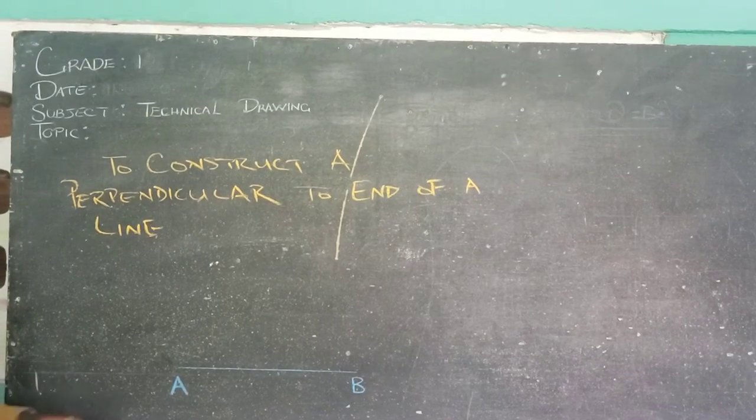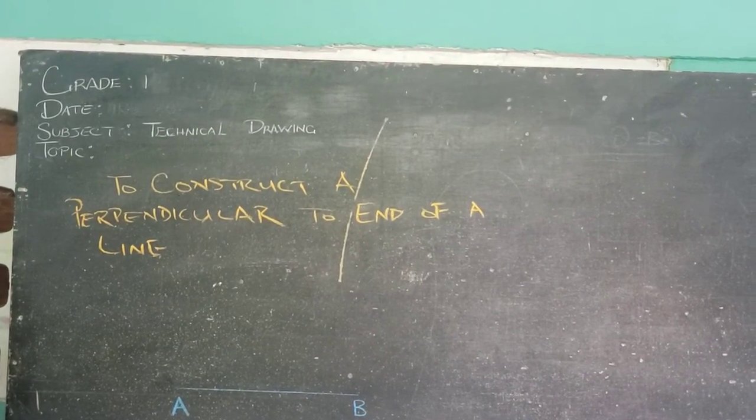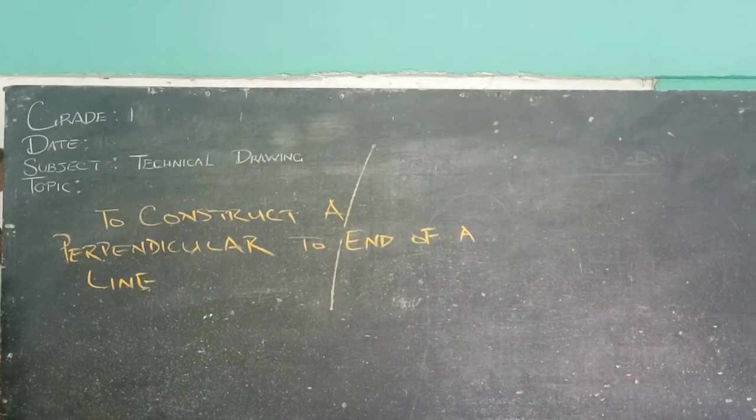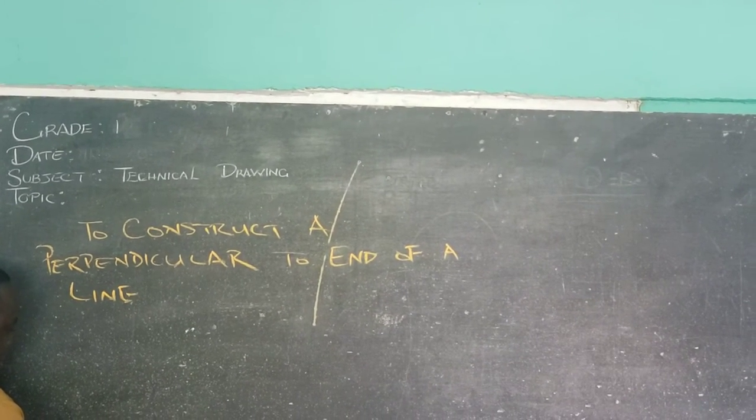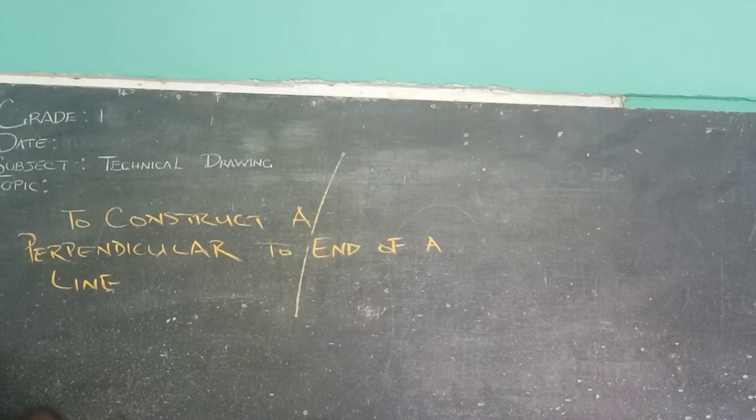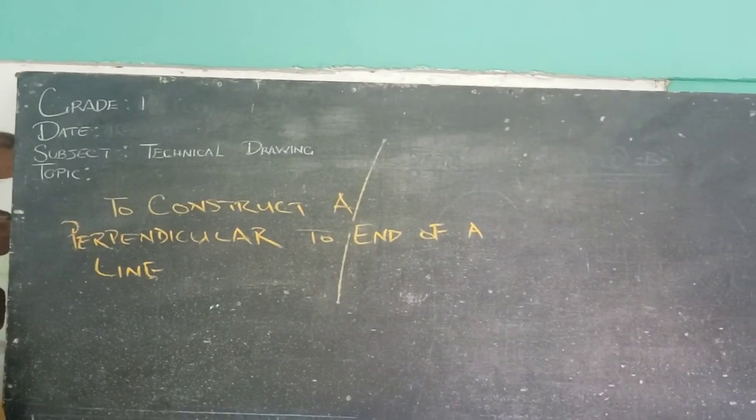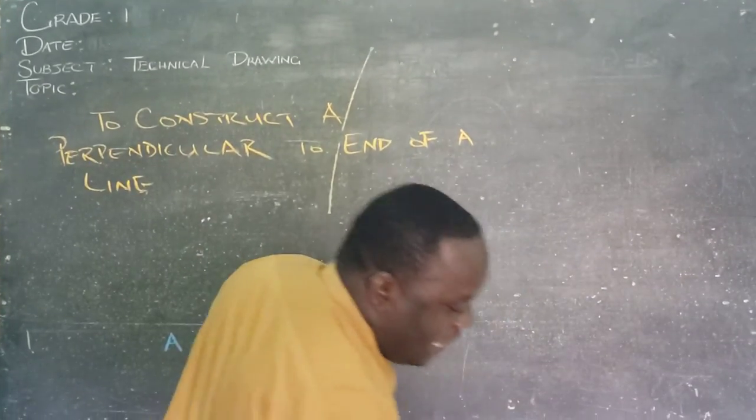Which end do we want to use? Well let us use the end at A. We're going to be constructing a perpendicular at A. Now what I'm going to be doing in green will be construction line. So I will simply extend my given line at A.